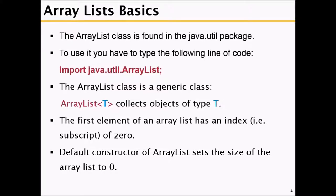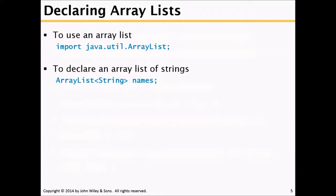The first element of an ArrayList is always at index 0. The default constructor of ArrayList sets the size of the ArrayList to 0. To use an ArrayList, import java.util.ArrayList at the beginning of the program.